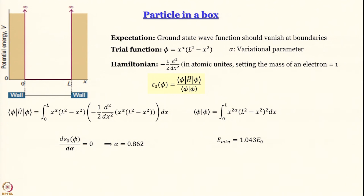As long as the shape matches and you have a parameter to play around with, it seems you can get close to the exact solutions. If you think 4 percent is close, just wait and see what happens in the next module when we try to increase the number of parameters — we will keep getting closer and closer. We are now more or less convinced that we can use whatever wave function we like; at most we will have to do a bigger calculation, but we will never get an energy lower than the actual energy.